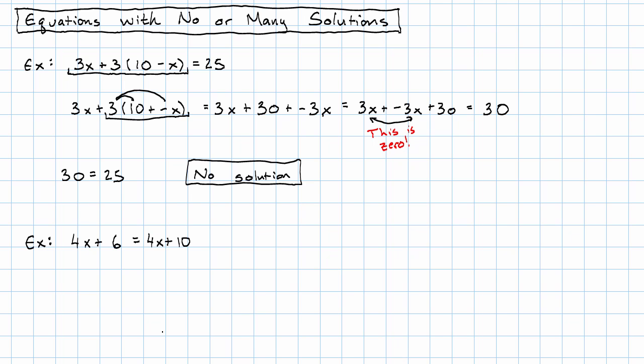We have the equation 4x plus 6 equals 4x plus 10. We decide to get rid of the x term on the left by adding negative 4x to both sides. Oh, but it turns out that both of those x terms cancel out.